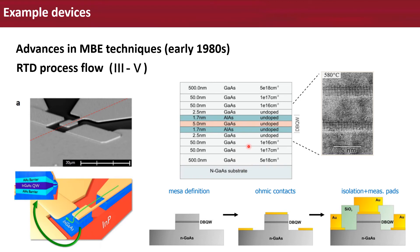The active region is surrounded by spacer and load-doped layers and contact layers. For device fabrication and electrical characterization: first, mesas are defined to obtain the active area of the device, which should be on the order of tens of micrometers. Next, contacts are processed by lift-off technique using a specific metallization and then annealed in a rapid thermal process to obtain ohmic behavior. Finally, the contacts are isolated with silicon dioxide and measurement pads are defined using the lift-off technique again, this time with gold metallization.